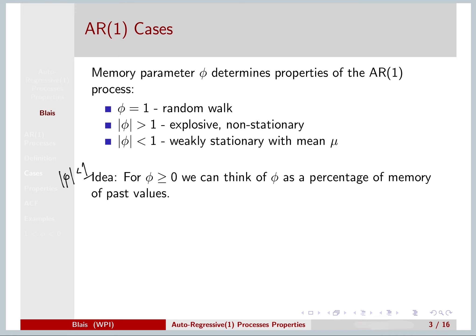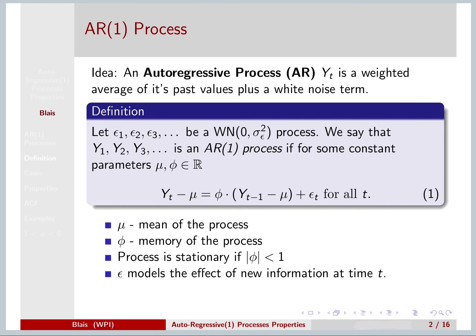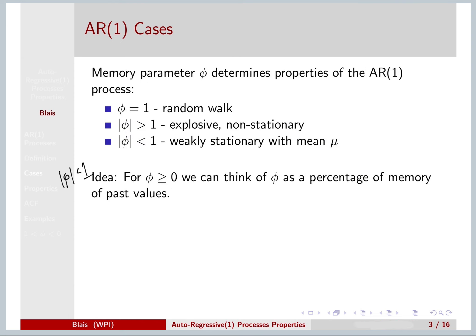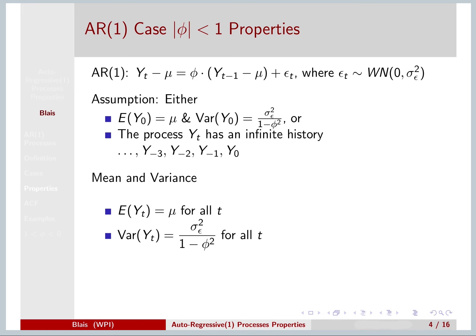If phi is positive or non-negative, think of it as a percentage of memory of past values. So think of this phi as being a percentage between 0 and 100% of memory of what happened yesterday. That being said, let's look at the properties of our AR1 process when it's weakly stationary.